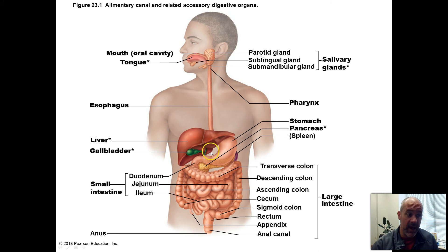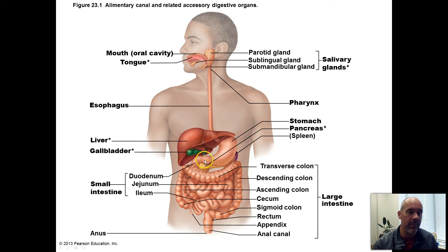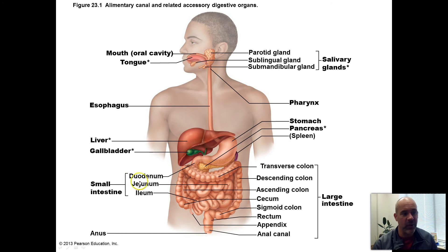Then chyme — the contents of the stomach — are emitted little bits at a time into the duodenum, which is the first part of the small intestine. Your small intestine is divided into three sections, which you learned about in biology 201. The first part is called the duodenum, the second is called the jejunum, and the third is called the ilium.